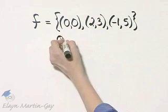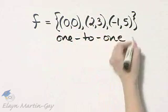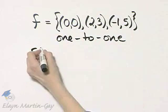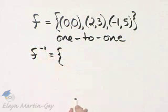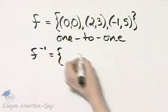So this is one-to-one. Let's write down then the inverse of this function. Remember, the inverse is simply all the ordered pairs in switched order.